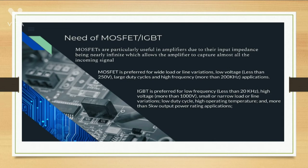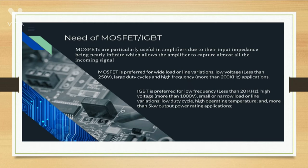What is the need of MOSFET or IGBT? MOSFETs are particularly useful in amplifiers due to their input impedance being nearly infinite, which allows the amplifier to capture almost all the incoming signals. MOSFET is preferred for wide load or line variations, low voltage, large duty cycle, and high frequency applications. IGBT is preferred for low frequency, high voltage, small or narrow load or line variations, low duty cycle, high operating temperature, and more than 5 kilowatt output power rating applications.